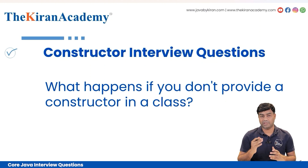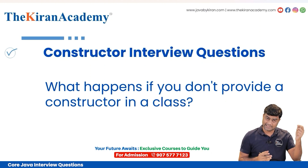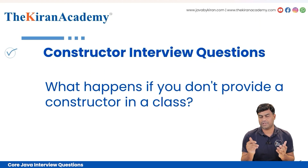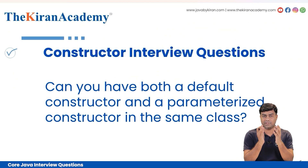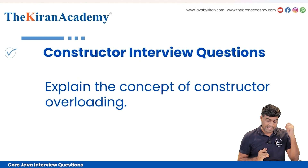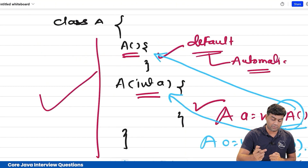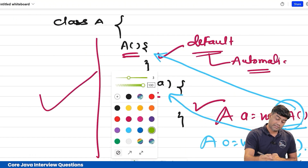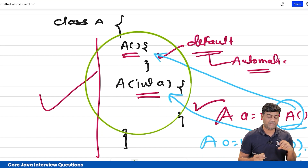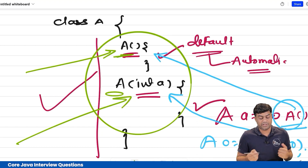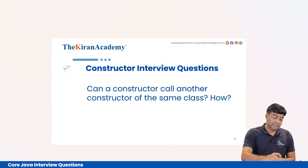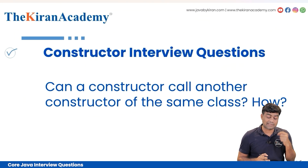What happens if you don't provide a constructor in a class? Automatically, the JVM will insert a constructor with the same access specifier as the class and no parameters. Can you have both a default constructor and a parameterized constructor in the same class? Yes. This is exactly constructor overloading — multiple constructors with the same name but different arguments.